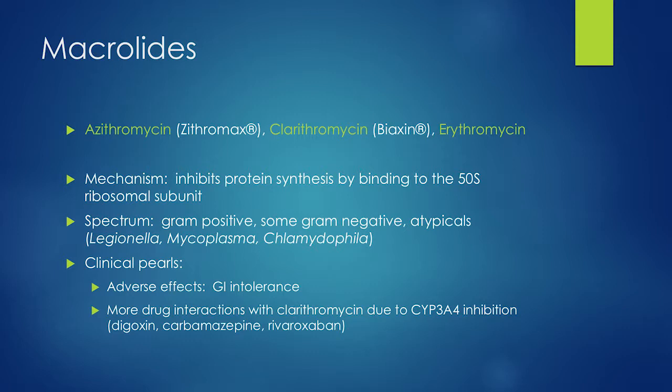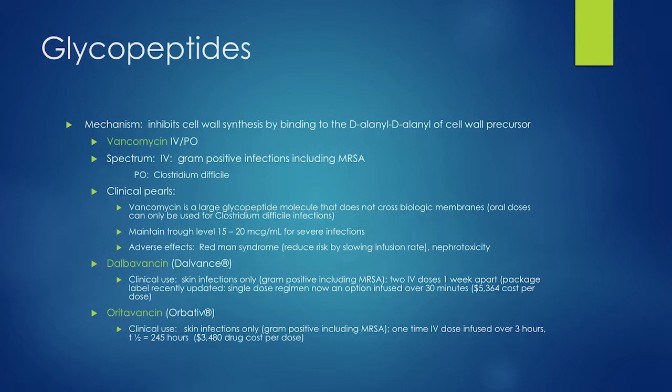Glycopeptide antibiotics — most commonly vancomycin — inhibit cell wall synthesis by binding to the D-alanyl D-alanine part of the bacterial cell wall. IV vancomycin is strictly gram positive coverage, including MRSA. Vancomycin is truly your workhorse for wanting to cover MRSA. PO vancomycin can be given to treat C. diff.